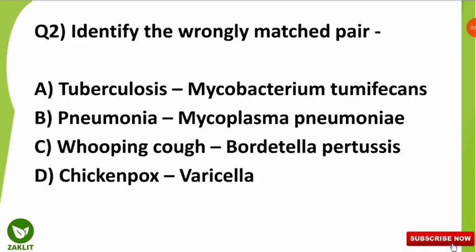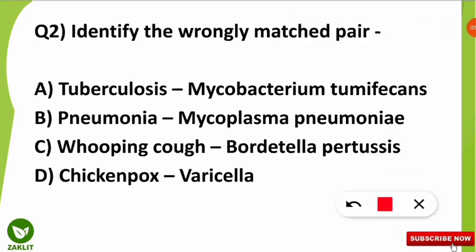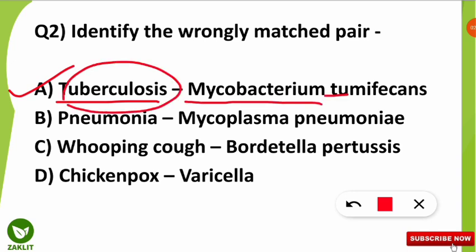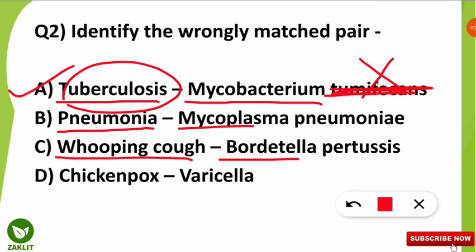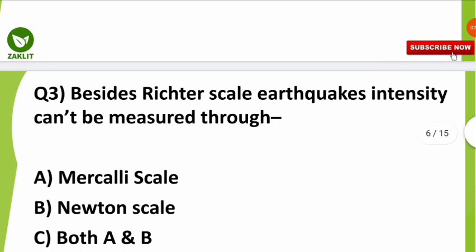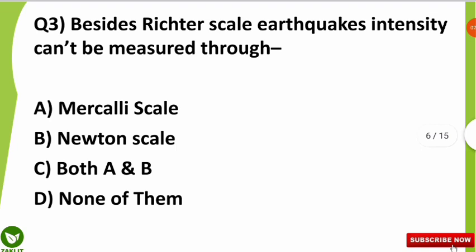The second question was: identify the wrongly matched pairs, where disease names were paired with causal organisms. The wrongly matched pair is option A, because tuberculosis is caused by Mycobacterium tuberculosis — not the organism listed. You should also know: pneumonia is caused by Mycoplasma pneumoniae, whooping cough by Bordetella pertussis, and chickenpox by Varicella. These are important — kindly note them down.